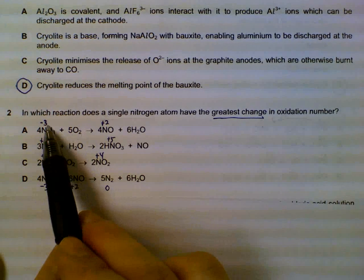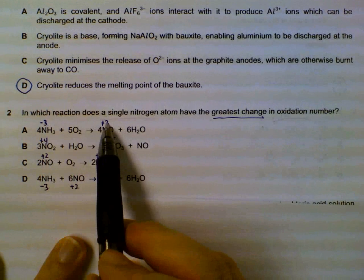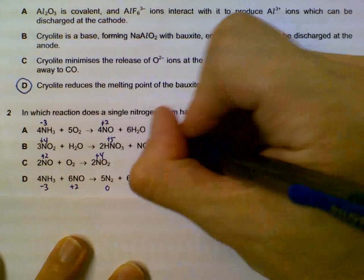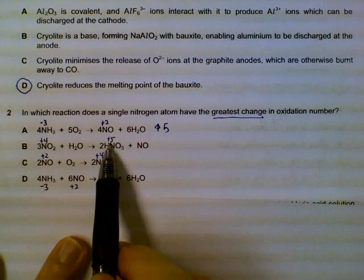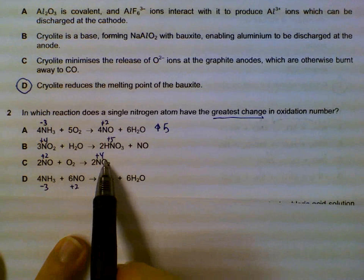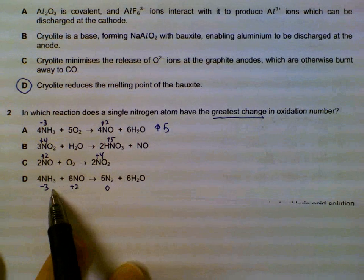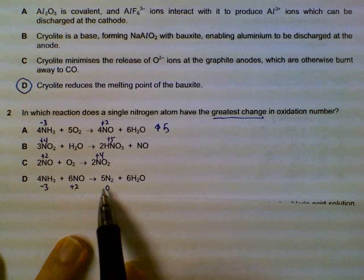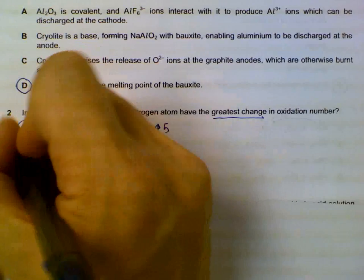Minus three going to plus two actually need to increase by five units. So increase by five. Plus four to plus five only increases by one. Option C will increase by two. D, we can either increase by three or decrease by two. So the greatest change is actually A, a change of five units.